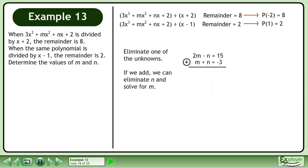Eliminate one of the unknowns. If we add, we can eliminate n and solve for m. Adding the equations gives 3m equals 12. Divide both sides by 3 to isolate m. This gives us m equals 4.